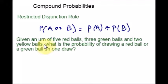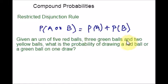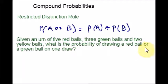Given an urn of 5 red balls, 3 green balls, and 2 yellow balls, what is the probability of drawing a red ball or a green ball on one draw? The total is 10 balls. The probability of drawing red is 5 out of 10, and the probability of drawing green is 3 out of 10. Since it is an OR question, you just add the probabilities. First, check whether the events are mutually exclusive, and then apply the formula.